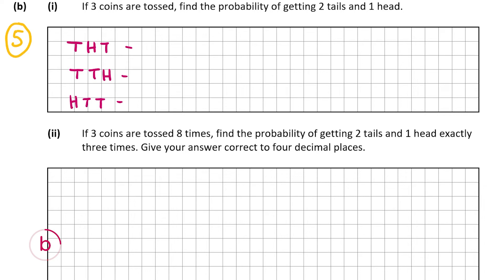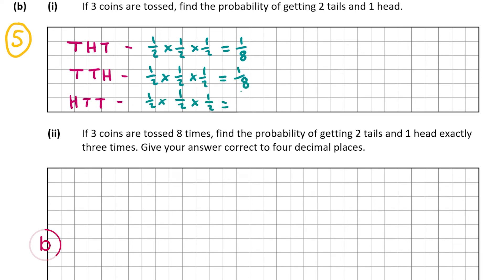To work out the probability of getting tail, head, tail: the probability of each outcome is one half, since there are only two options when tossing a coin. So one half × one half × one half = one eighth. The same applies to TTH and HTT — each gives one eighth. Adding those three probabilities together: one eighth + one eighth + one eighth = three eighths. So the answer for B part 1 is 3/8.